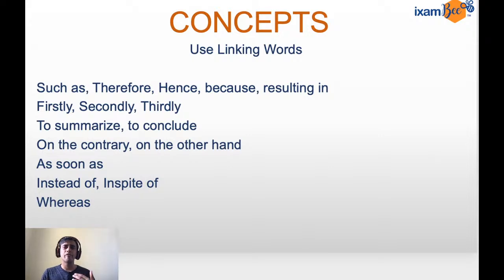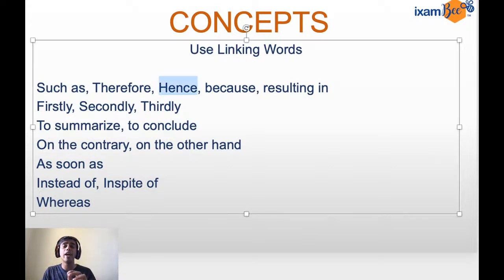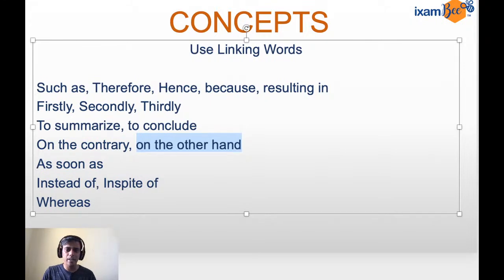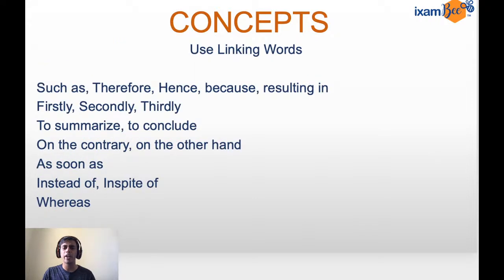The first is: firstly, secondly, thirdly — whenever you're coming across a list and giving multiple points, please use them. Then: 'for example,' 'therefore,' 'hence,' 'because,' 'resulting in' — all these words will indicate where you are moving. Also: 'instead of,' 'in spite of,' 'whereas,' 'as soon as,' 'on the other hand,' 'on the contrary' — all these will take you to where you are going.